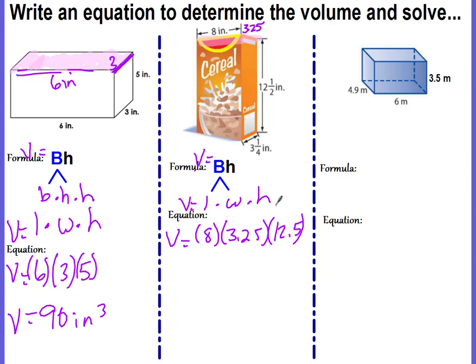Eight times 3.25 is going to be 26. And I multiply that by 12.5, and I get 325. And put your measurements inches cubed.